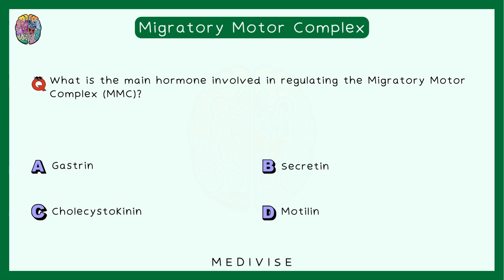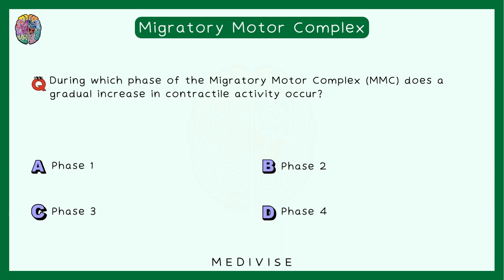Next question: What is the main hormone involved in regulating the MMCs? The hormone responsible is motilin. Next question: During which phase of the migratory motor complex does a gradual increase in contractile activity occur? The answer is phase 2, where there are small irregular contractions gradually increasing.